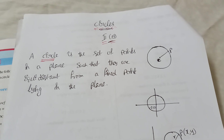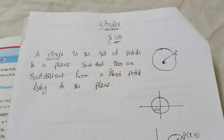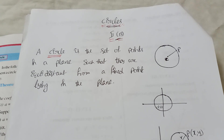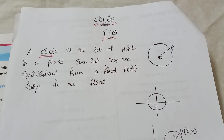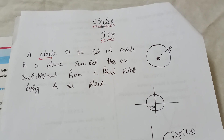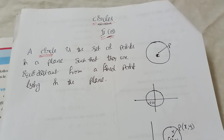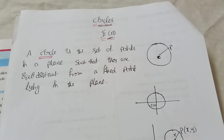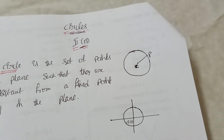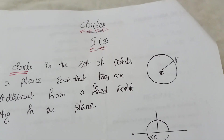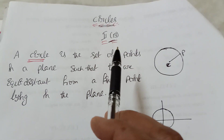Hi students, today I am explaining the Circles chapter. This is a very important chapter for senior intermediate. The chapter weight is 22 marks — in IP2, 7 marks, plus 1 is 4, plus 2 is 2 marks. That's why it's a very important topic, but it is easy. You should concentrate on this chapter.